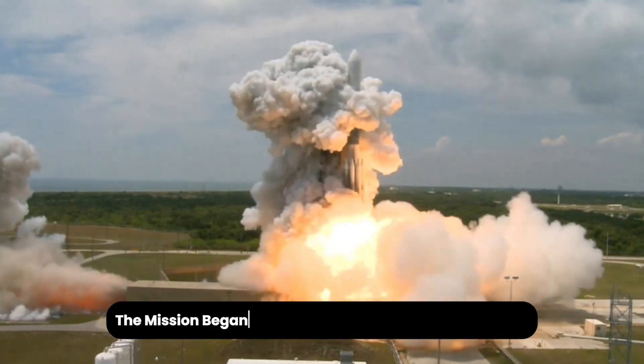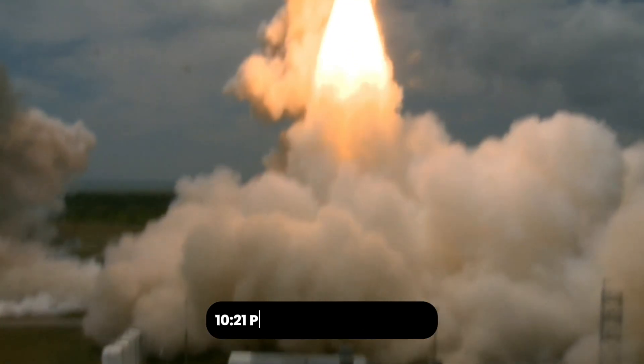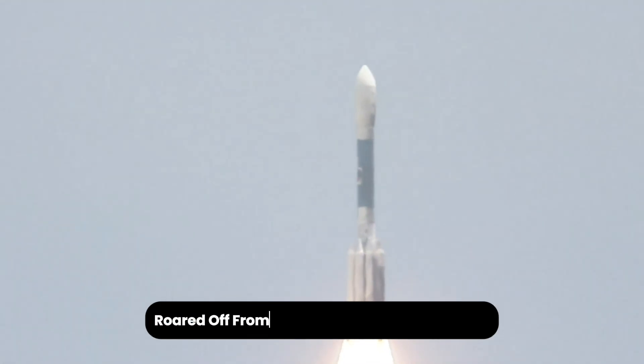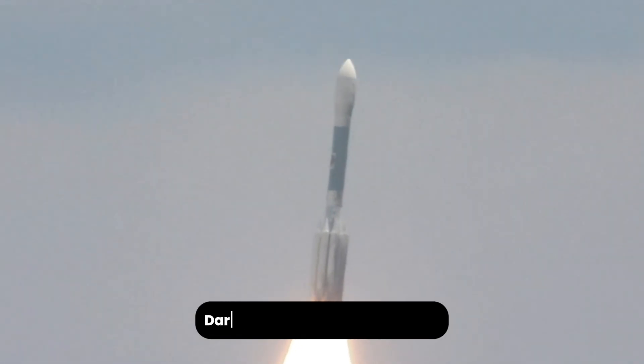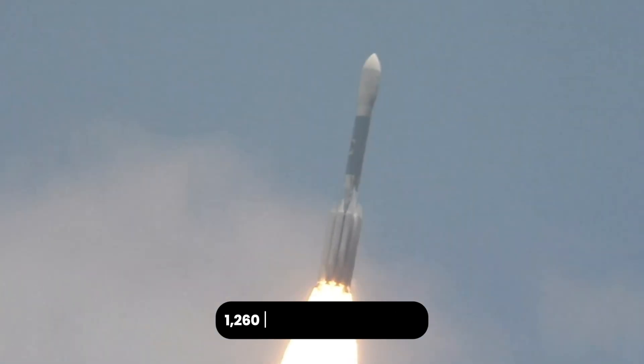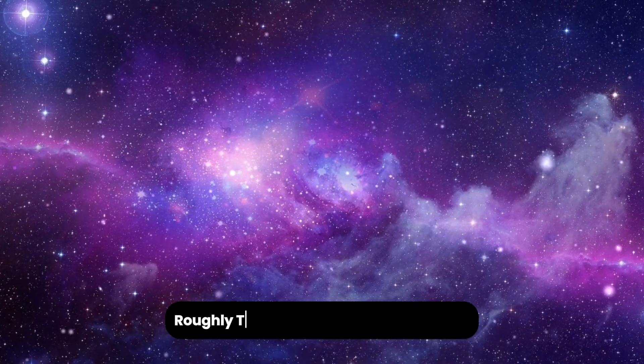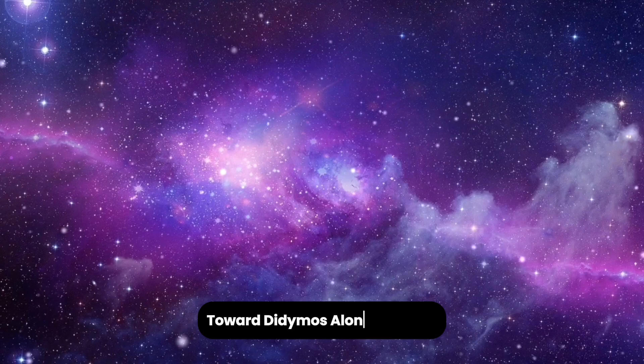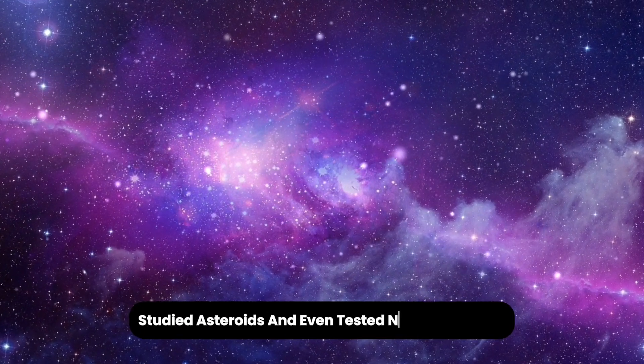The mission began on November 24th, 2021. At 1:21 a.m. EST, 10:21 p.m. PST, a Falcon 9 rocket roared off from Vandenberg Space Force Base in California, carrying the DART spacecraft. NASA notes that this was truly a one-way trip. DART had no brakes or parachute. It was a lean, 575-kilogram, 1,260-pound box spacecraft designed only to smash into its target. For about 10 months, DART coasted through space, roughly 2.5 billion kilometers toward Didymos. Along the way, it performed small course corrections, studied asteroids, and even tested new technology.